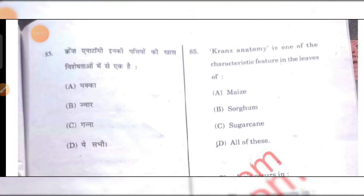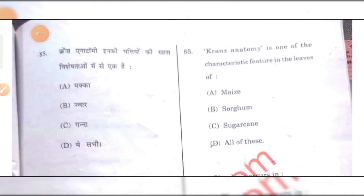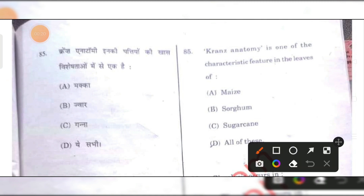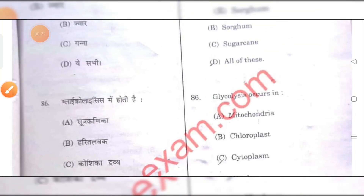Kans endotomy is one of the characteristics or features of sugarcane. C is the right answer.